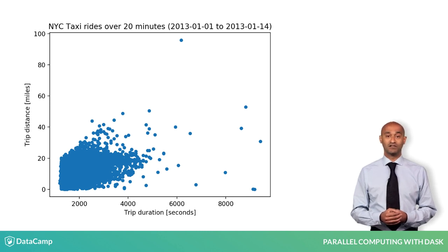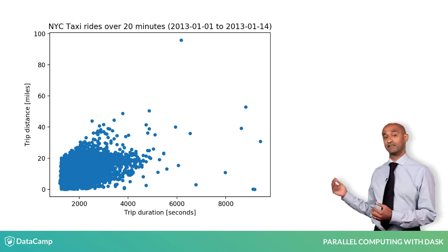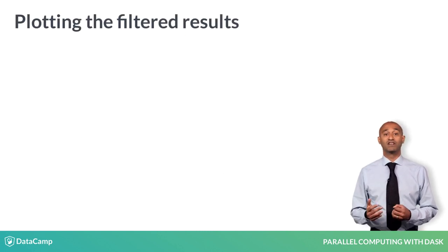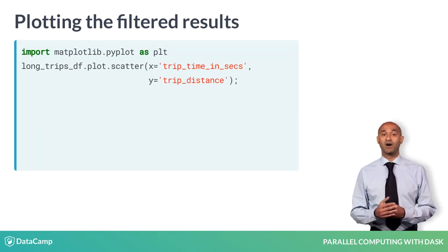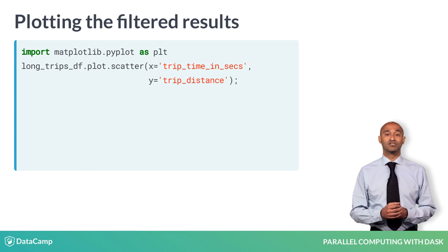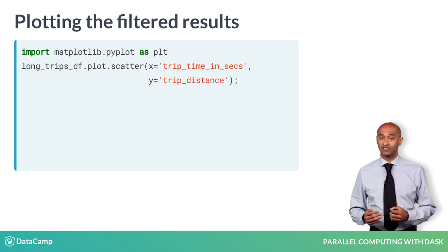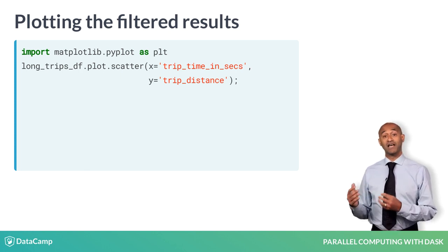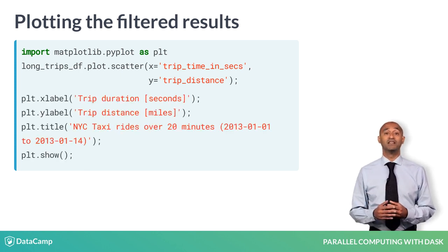Finally, we can visualize these trips, and the result looks something like this. We generate the last plot with this code, starting by importing matplotlib.pyplot and constructing a scatterplot using plot.scatter. We apply labels and display the plot with plot.show.